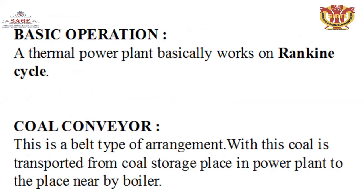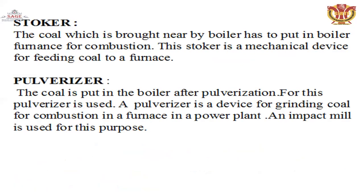What is the basic operation of the thermal power plant? It basically works on the Rankine cycle. The coal conveyor is a belt-type arrangement by which coal is transported from the coal storage place in the power plant to the place nearby the boiler.